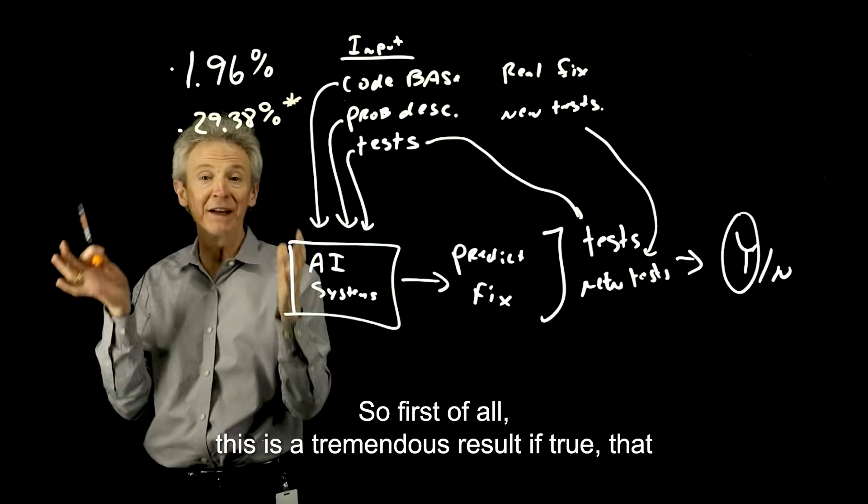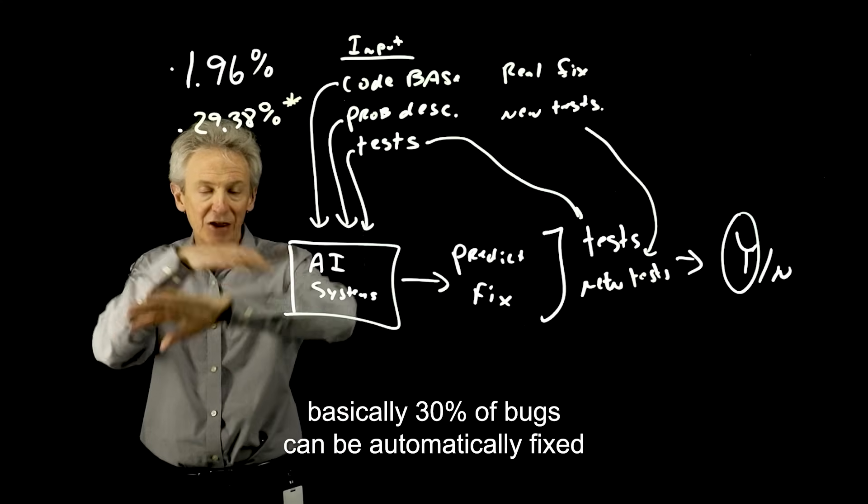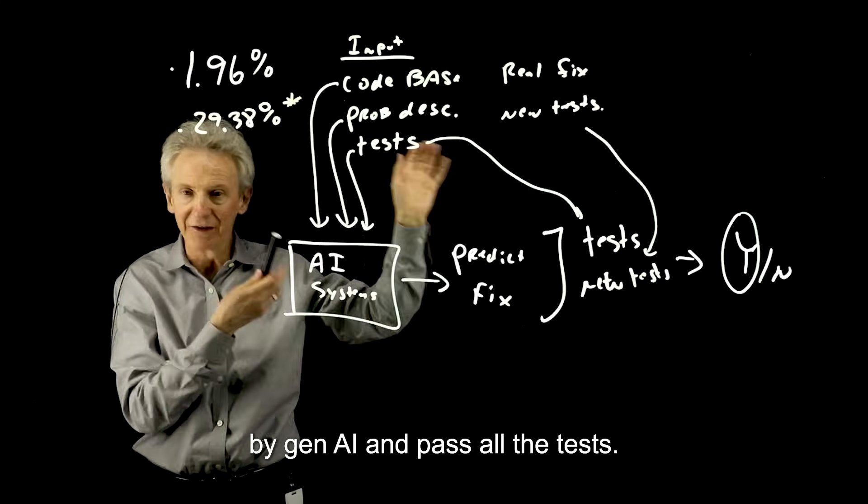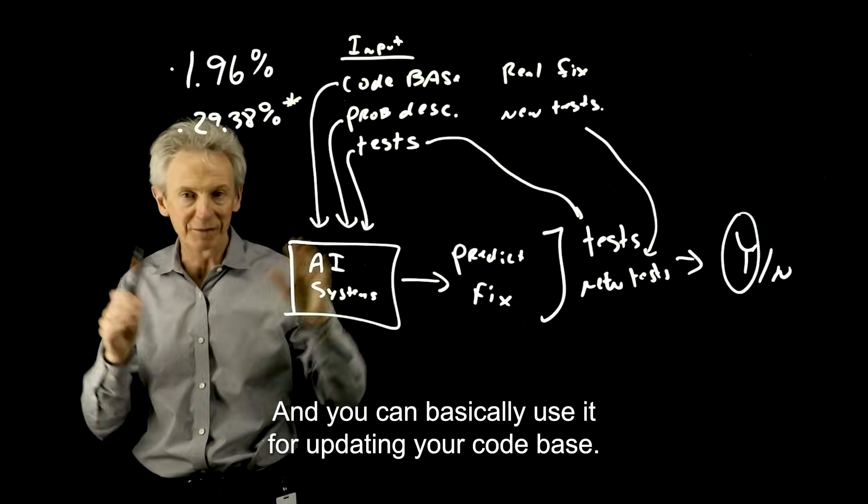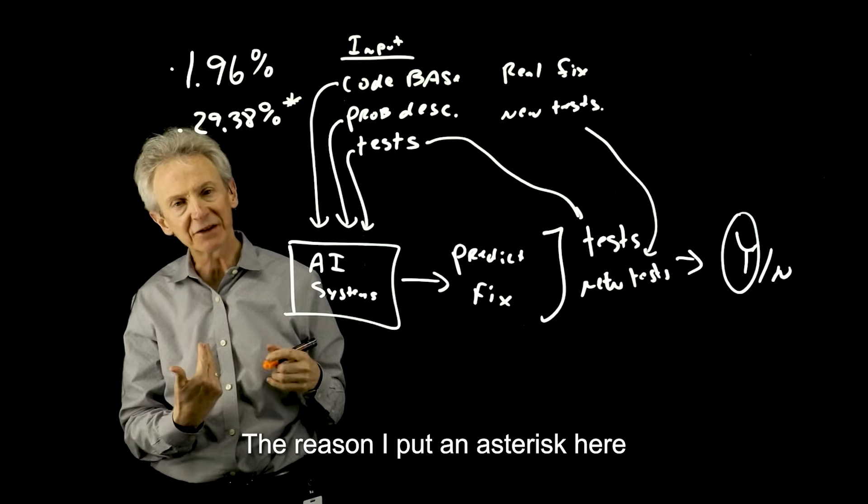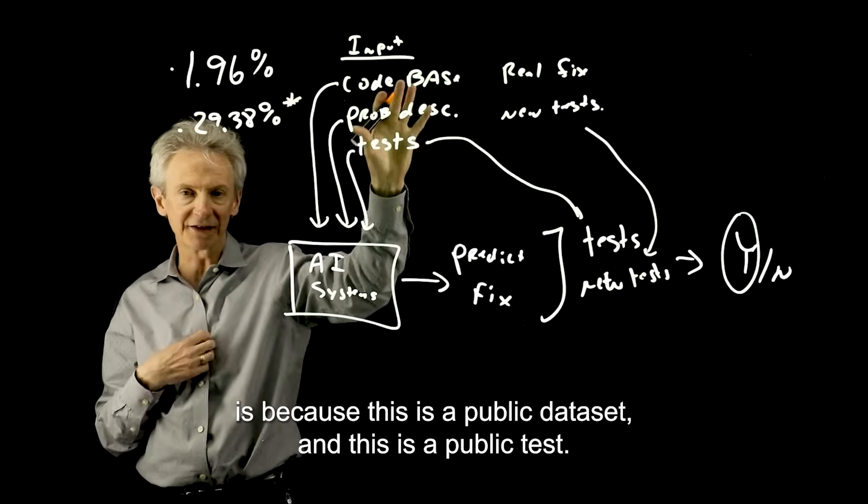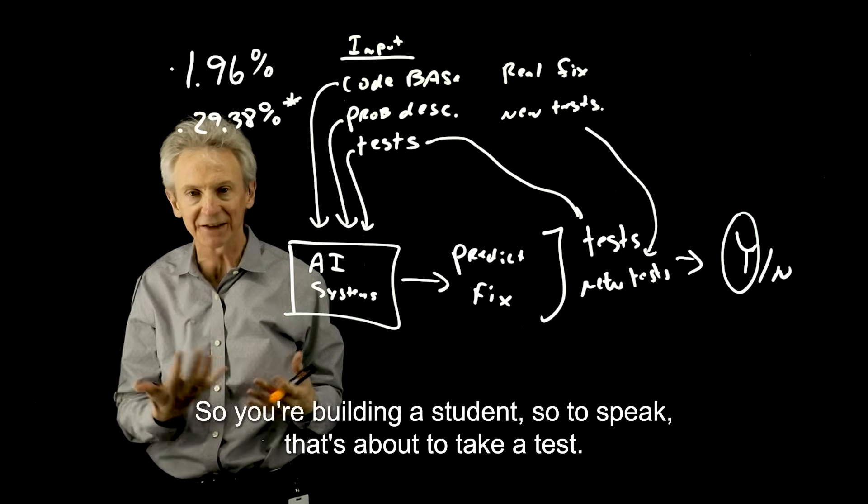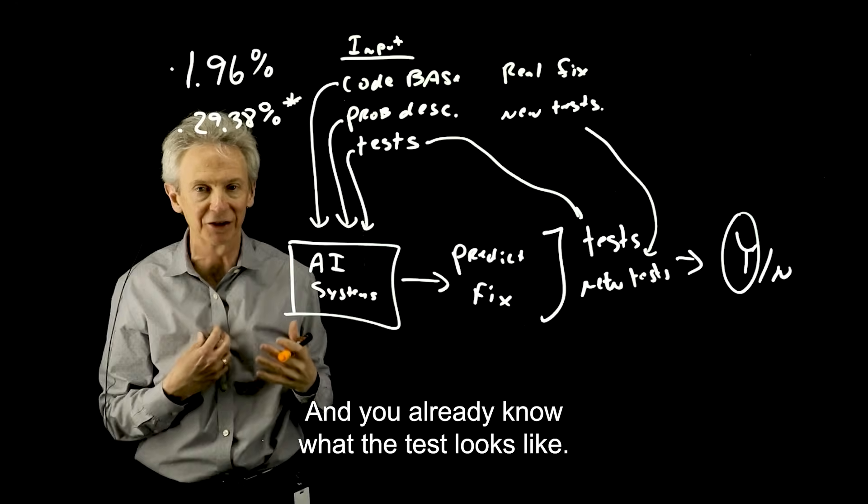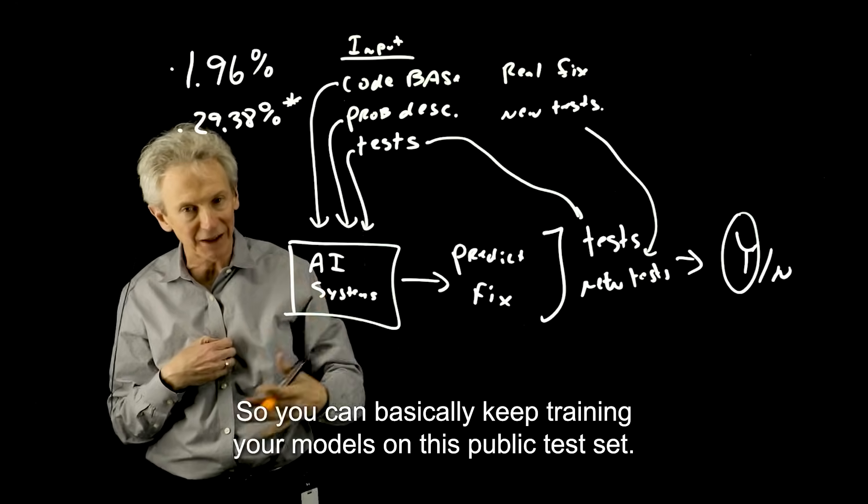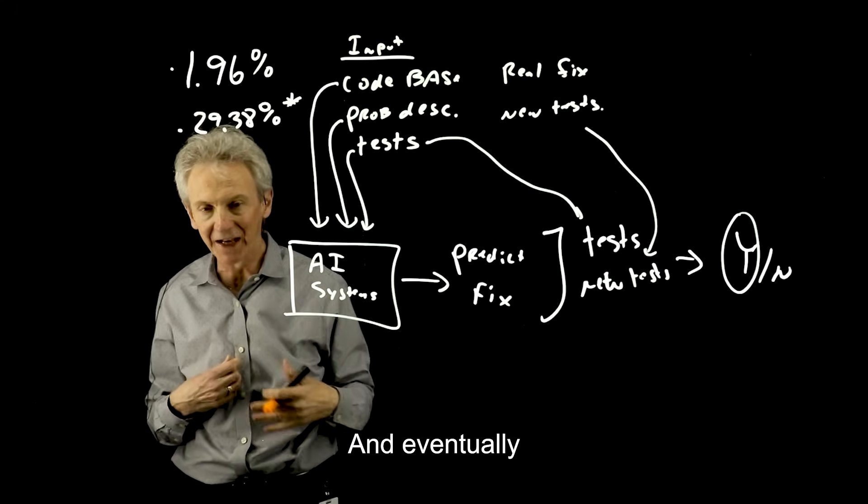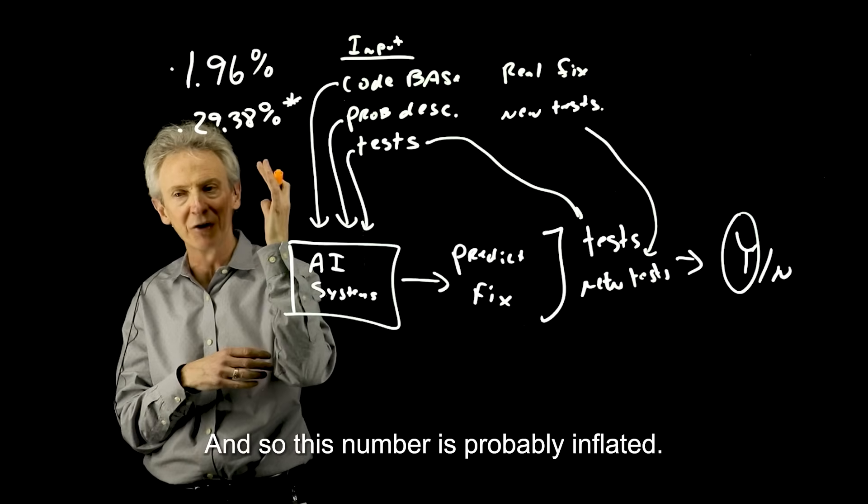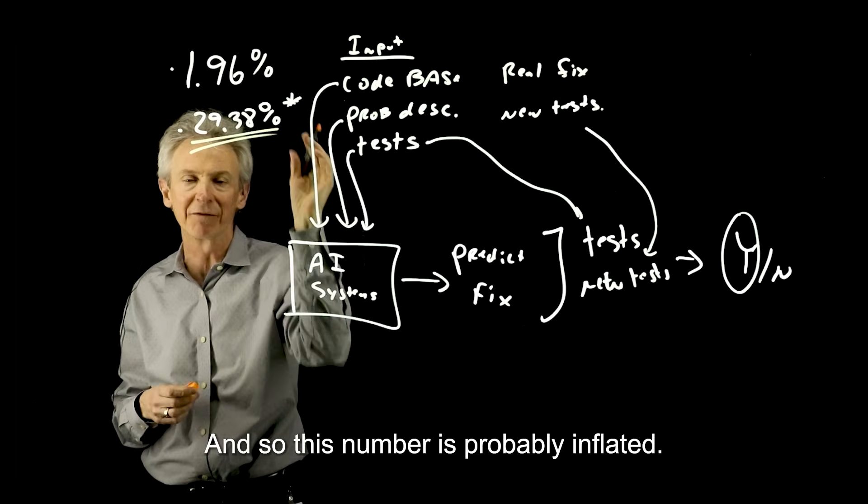So first of all, this is a tremendous result if true, that basically 30% of bugs can be automatically fixed by Gen AI and pass all the tests and you can basically use it for updating your code base. The reason I put an asterisk here is because this is a public data set and this is a public test. So you're building a student, so to speak, that's about to take a test and you already know what the test looks like. So you can basically keep training your models on this public test set and eventually the models are going to memorize aspects of it, memorize the patterns, that sort of thing. And so this number is probably inflated. It's probably higher than 2%, but it's probably not 30%.